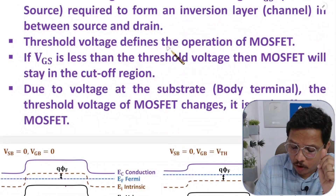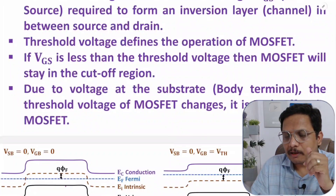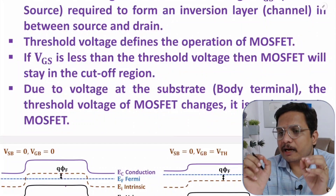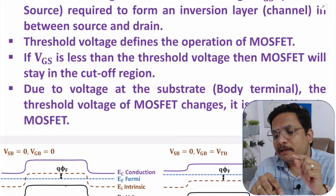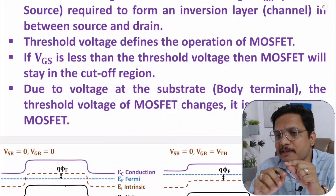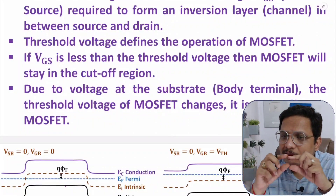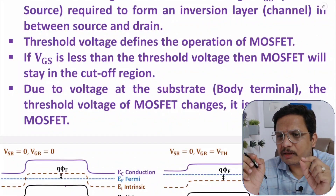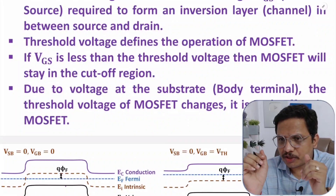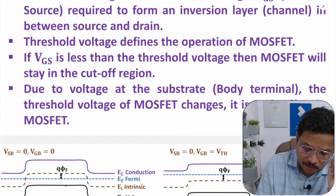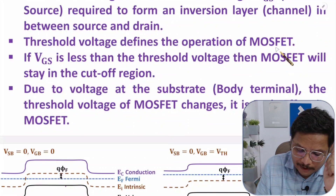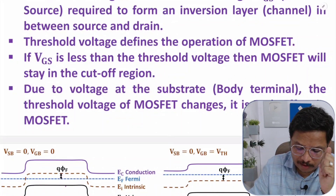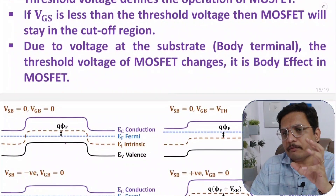Threshold voltage defines the operation of MOSFET. If VGS is lower than threshold voltage then MOSFET stays in the cutoff region. If VGS is equal to or greater than threshold voltage, there will be formation of an inversion layer and MOSFET can stay in the linear region or saturation region.